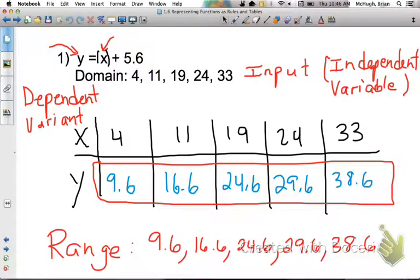Those values for the dependent variable are all based upon the input values or the independent variable's values. So this is our domain. This is our range. For this first example, let's take a look at another one.